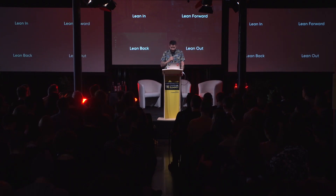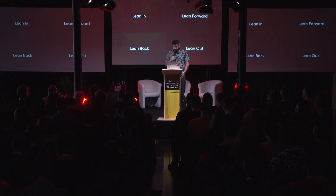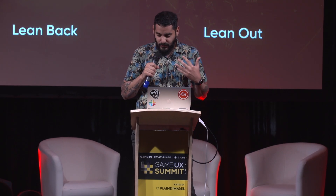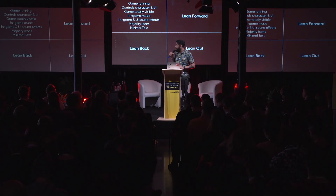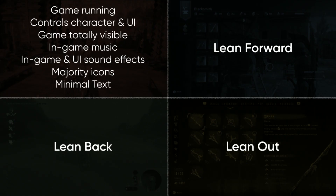Now that you've seen those examples, a good exercise is to compile some checklists to see what the characteristics are of those UIs. For leaned-in, the game is running, the player controls both character and UI, the game is visible, and it's a majority of icons with not a lot of text. In the lean-forward persona, the game is still running, but the player only controls the UI, you can see half the game, and in-game music is still playing.